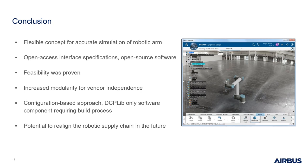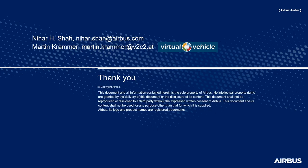We have introduced a flexible approach for accurate simulation of robotic arms, based on open access interface specifications and open source software. We have validated our approach by programming a UR10 robot. Our approach is fully configuration-based, with DCP-Lib being the only software requiring a build process. Such a simulation-based architecture has the potential to realign the robotic supply chain in the future, especially for large industrial manufacturers like Airbus. Thank you for listening to our talk.